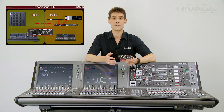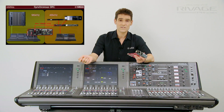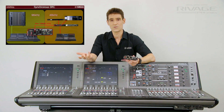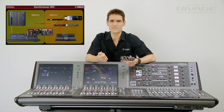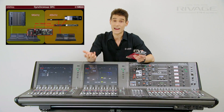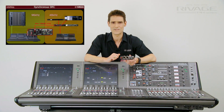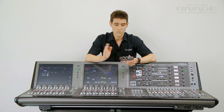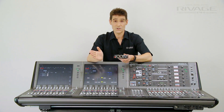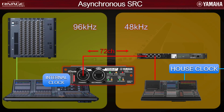For example, the CL5 monitor console, Shure ULXD wireless mic receivers, and some Nexo NX amps. Or you could choose asynchronous SRC mode to get 72 channels in and out at a completely different sample rate.